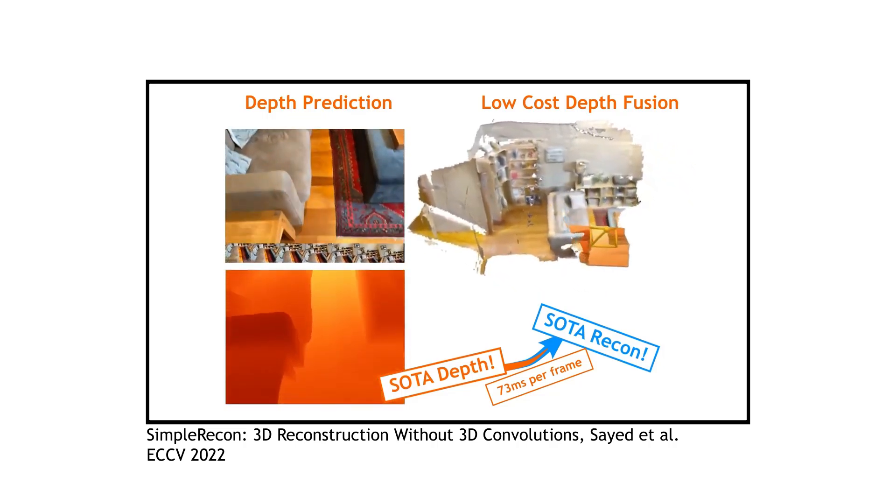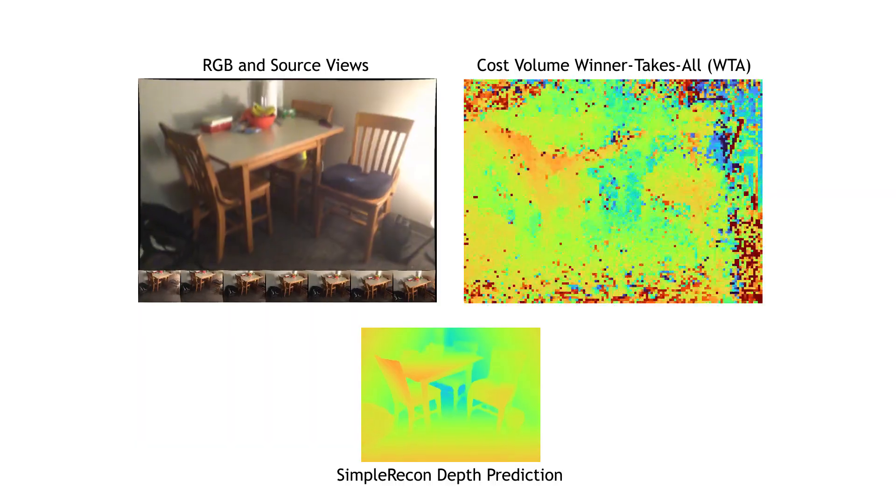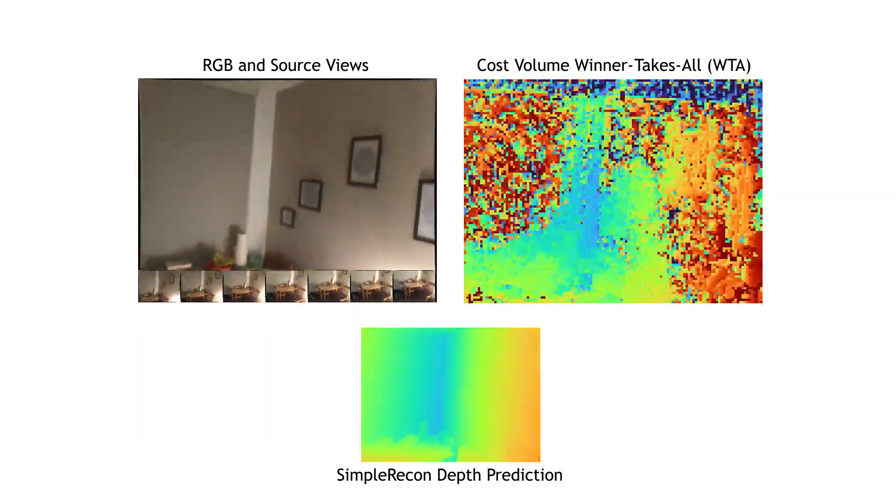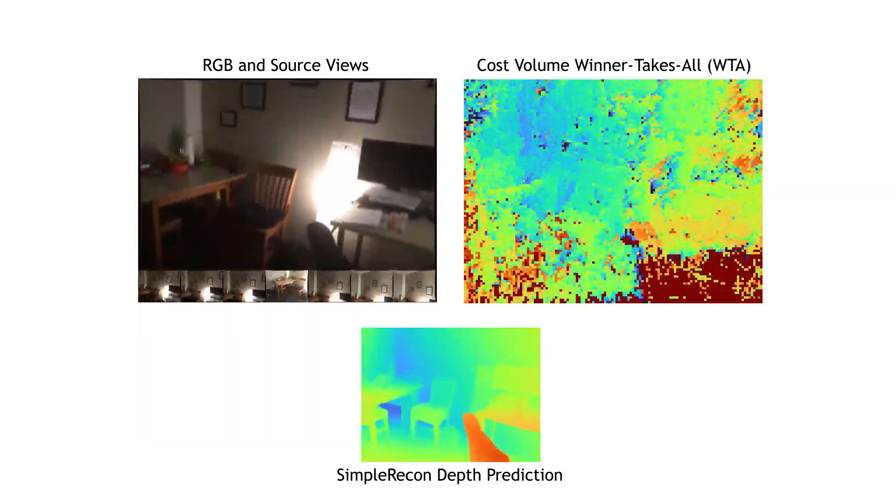There are, however, limitations. The learned monocular branch does its best to recover a complete, metrically accurate depth map from the noisy cost volume, but it can only do so much.